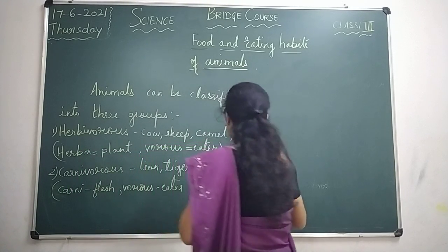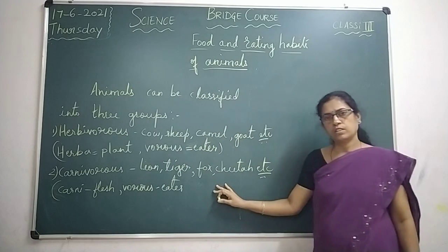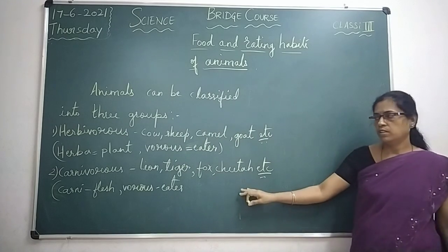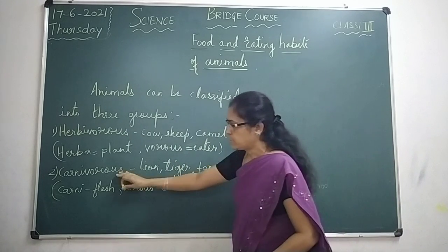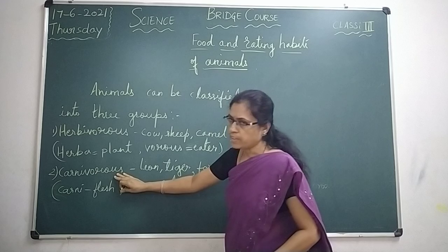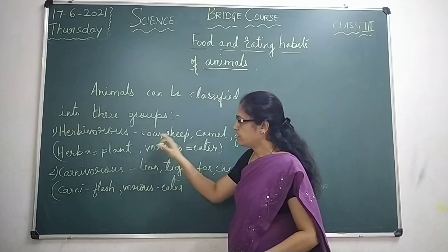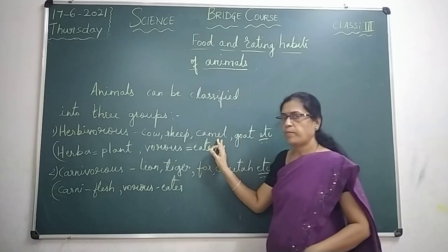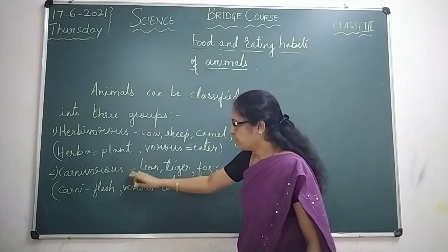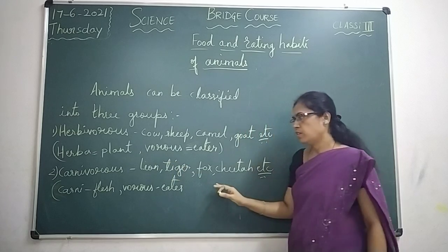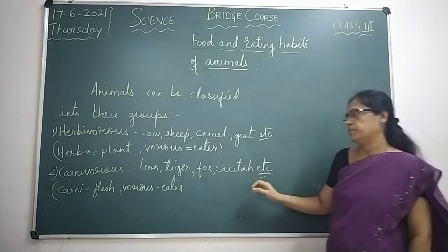So these animals eat the flesh of other animals, and these animals are classified as carnivores. Herbivores eat only plants and their parts, and carnivores eat only the flesh of other animals.